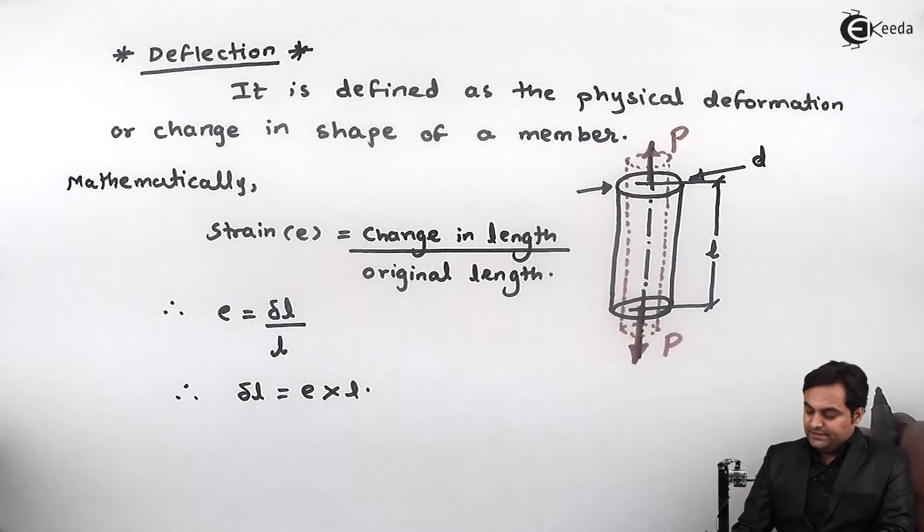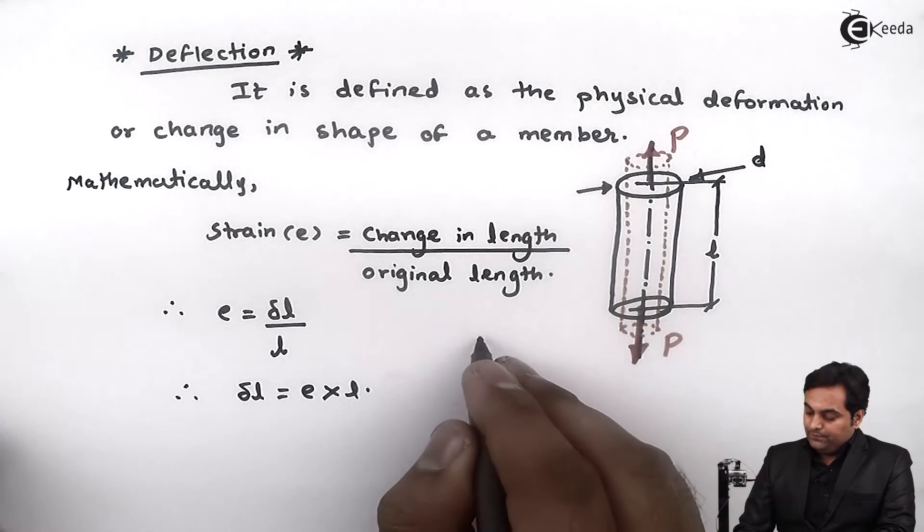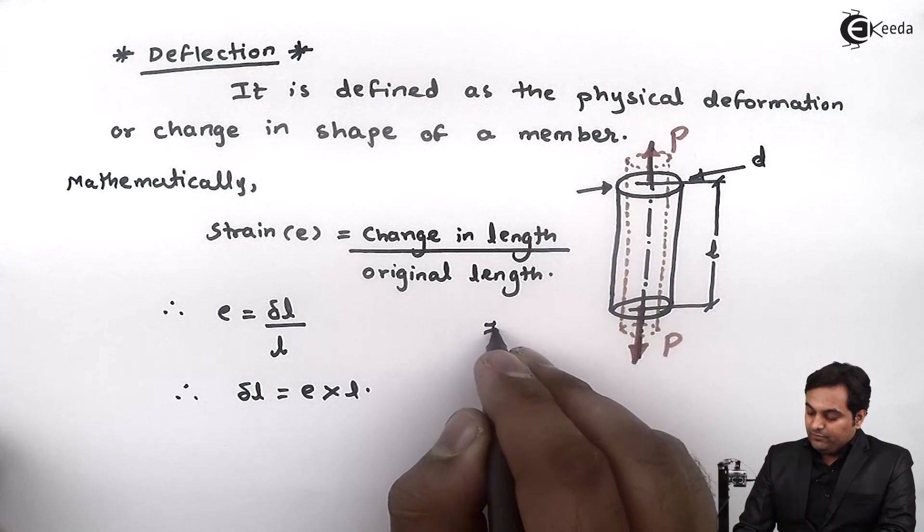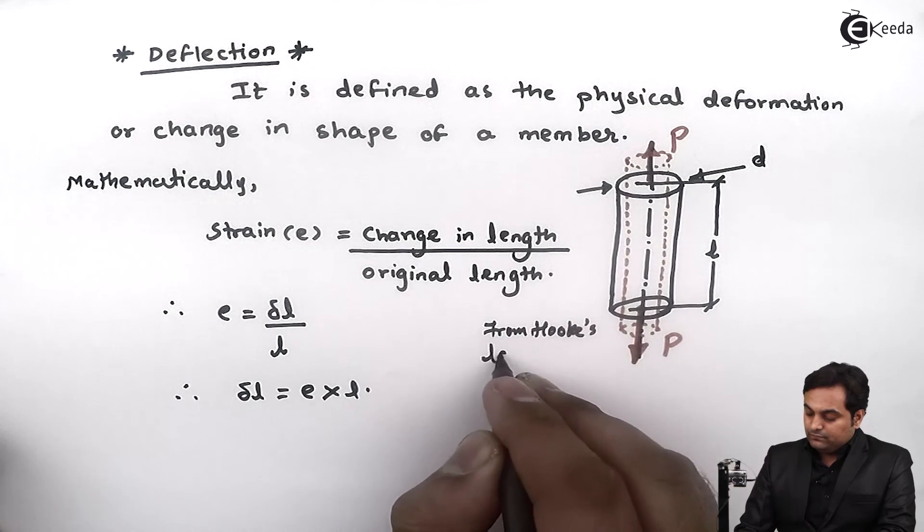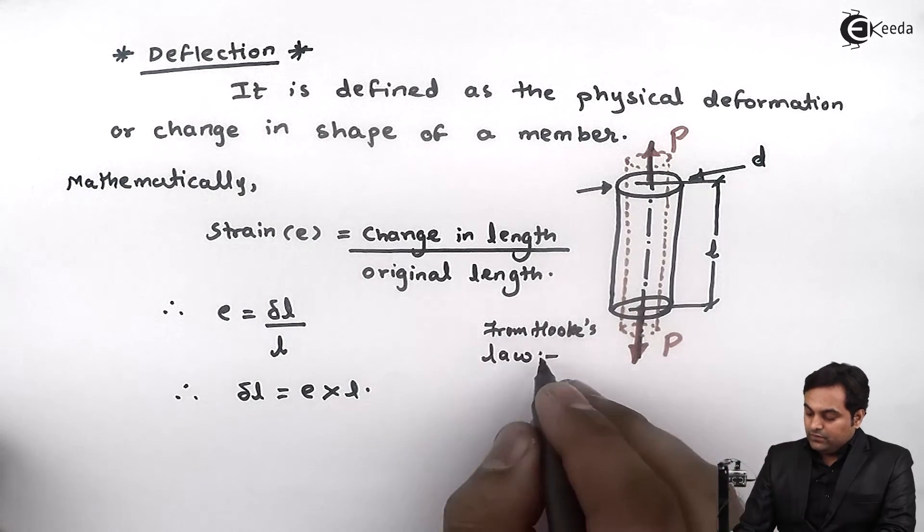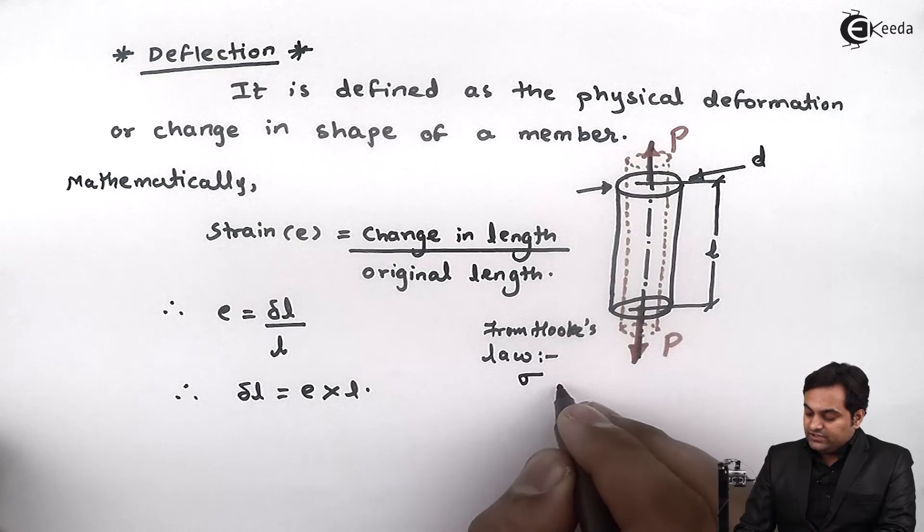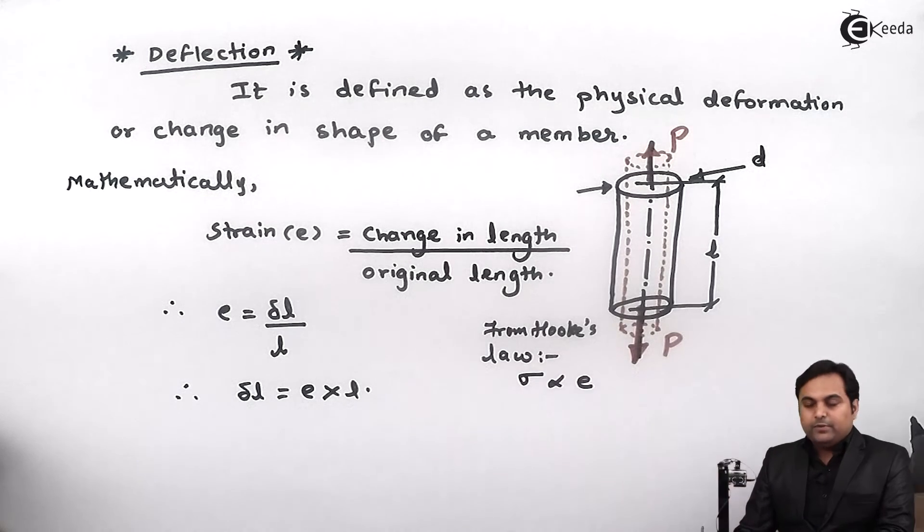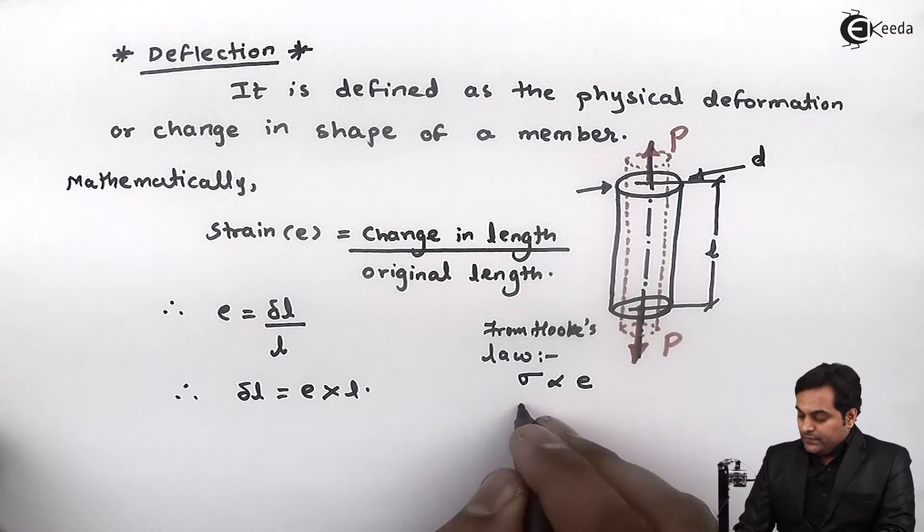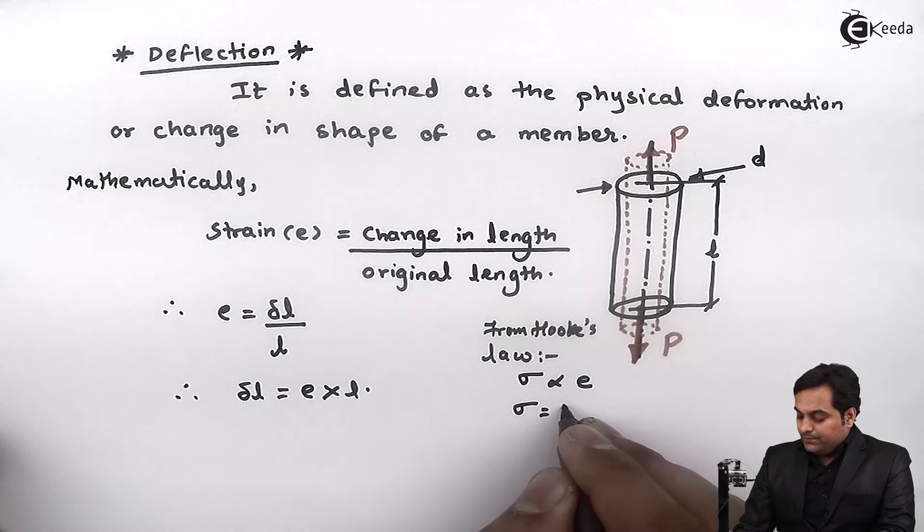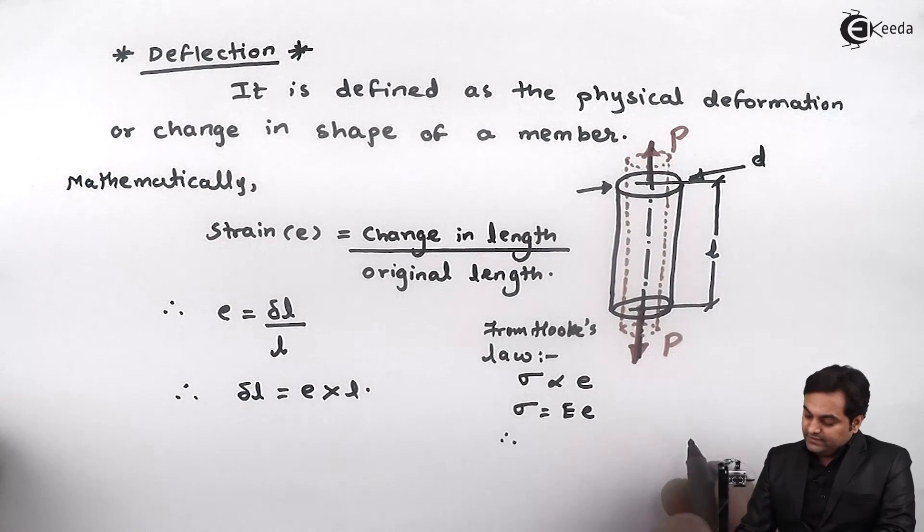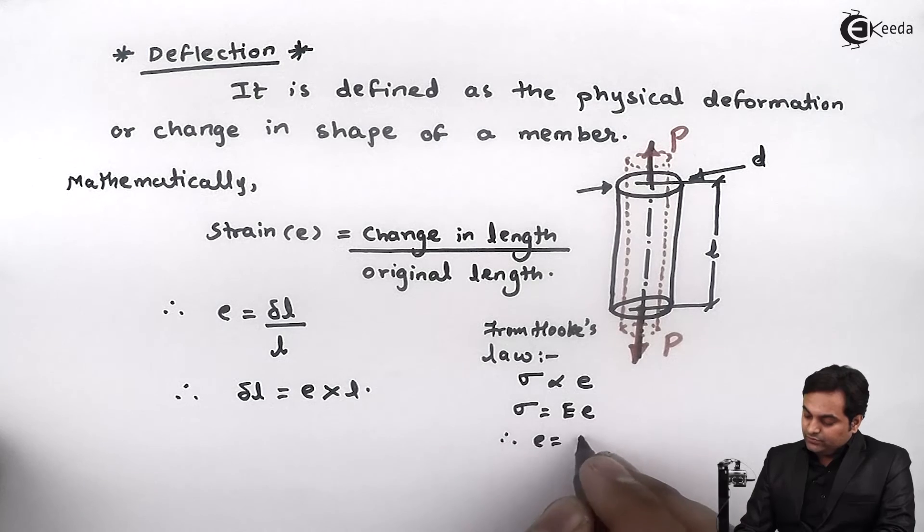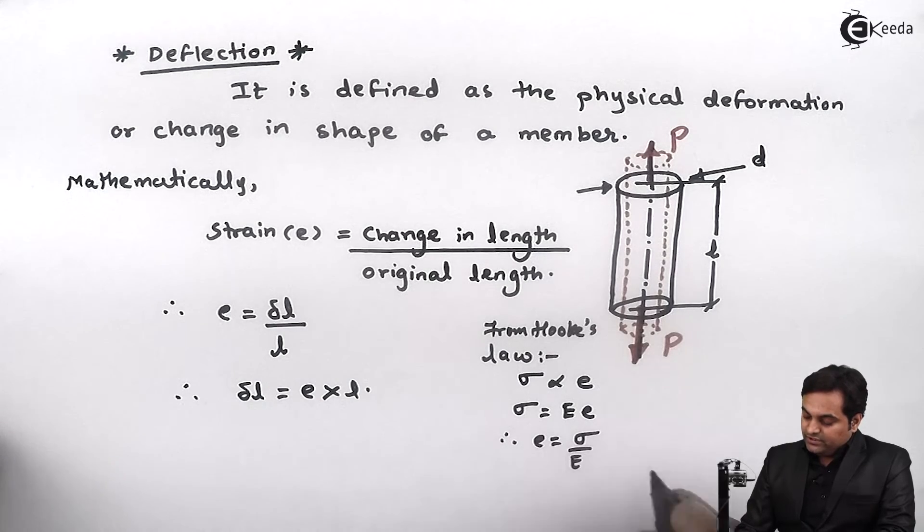Next I can say that from Hooke's law, as stress is directly proportional to strain, stress is equal to Young's modulus into strain. So therefore I can say that strain is equal to stress upon Young's modulus.